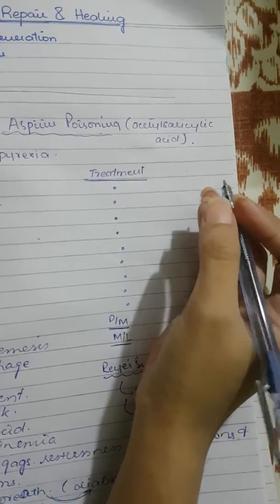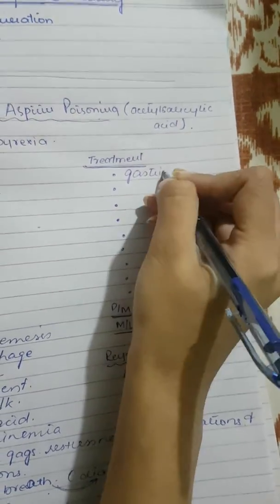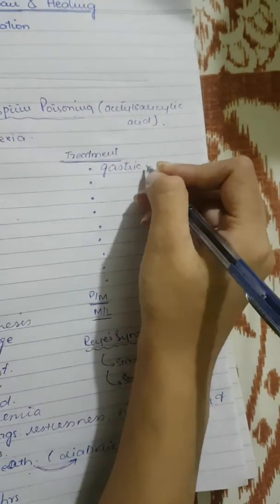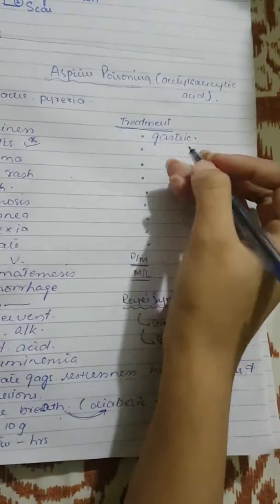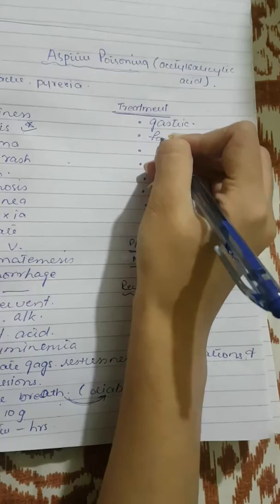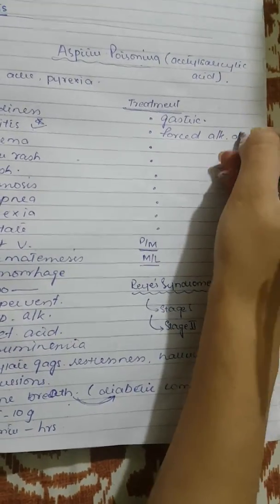The treatment will include gastric lavage. The gastric lavage is done with warm water and/or 5% solution of sodium bicarbonate. It may be done by forced alkaline diuresis.